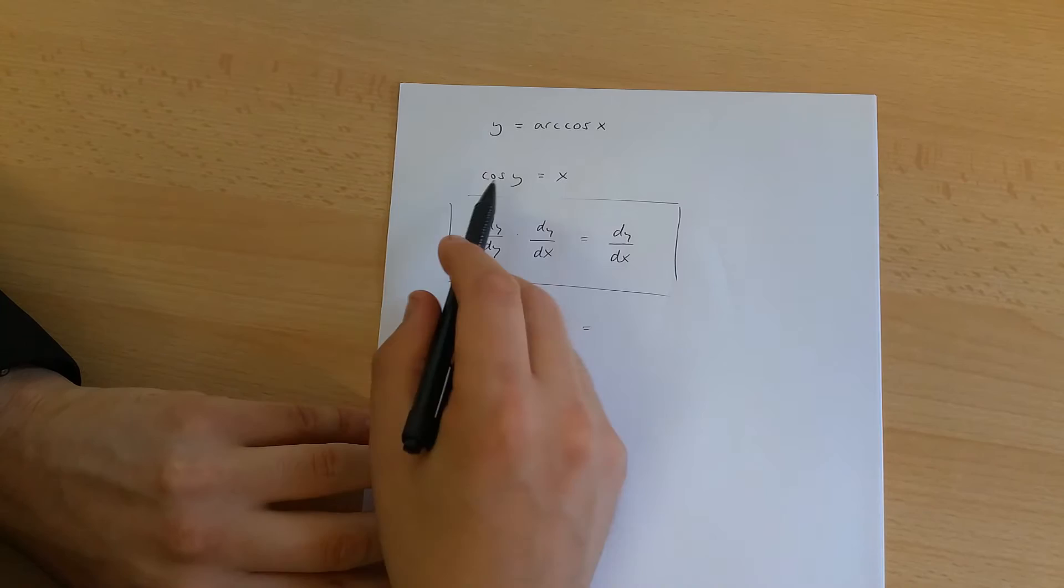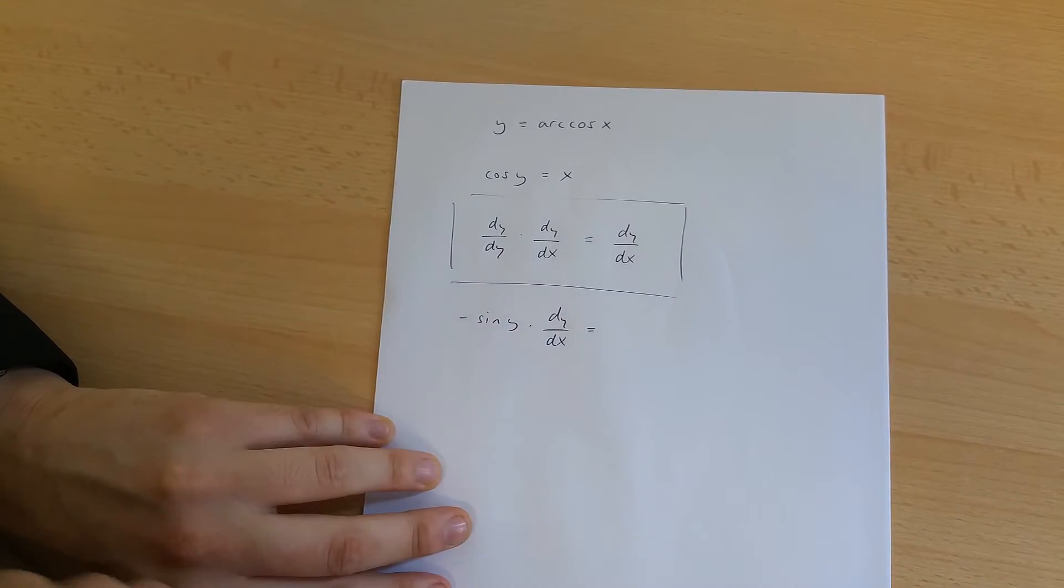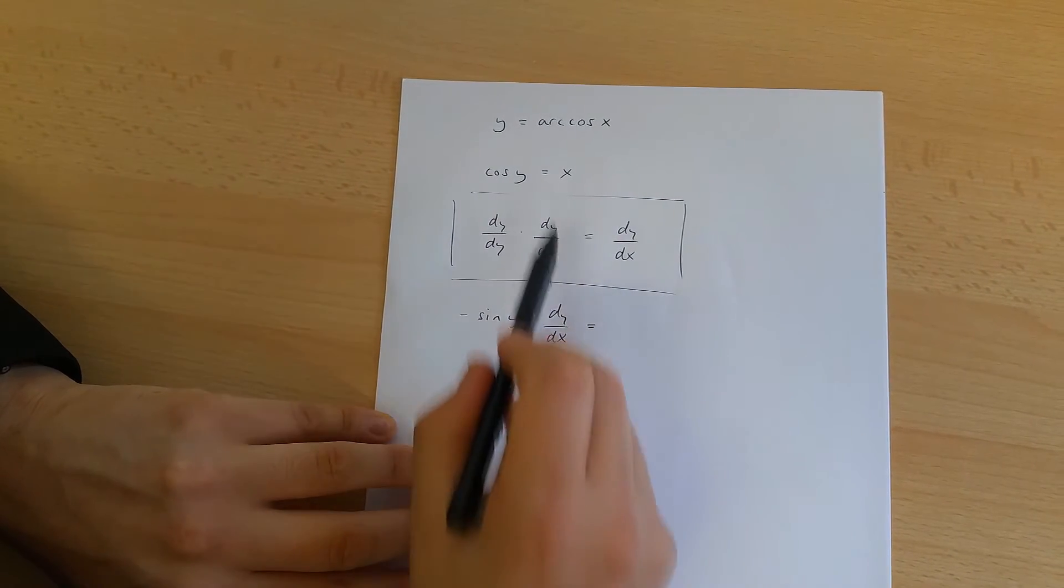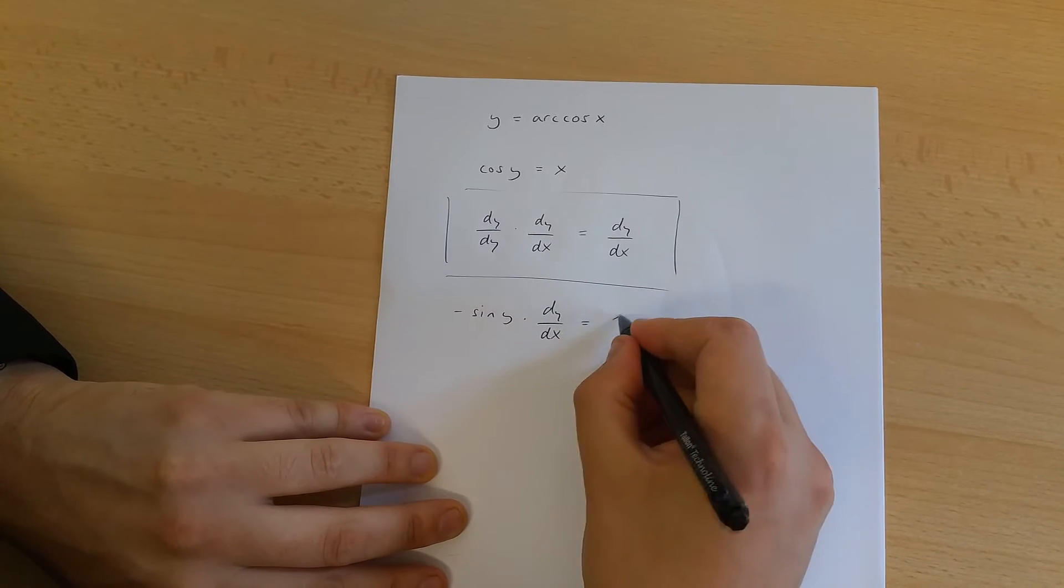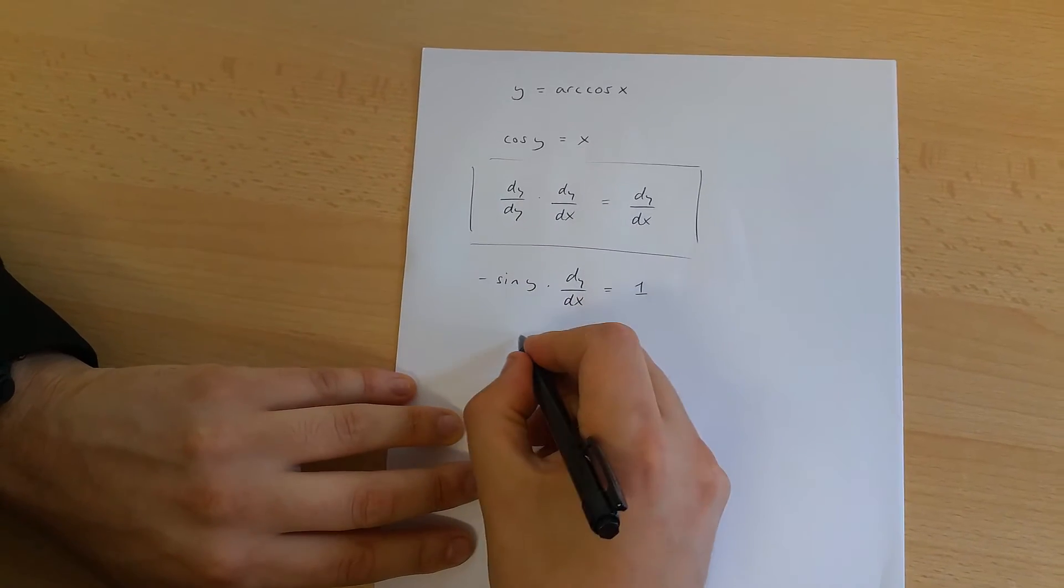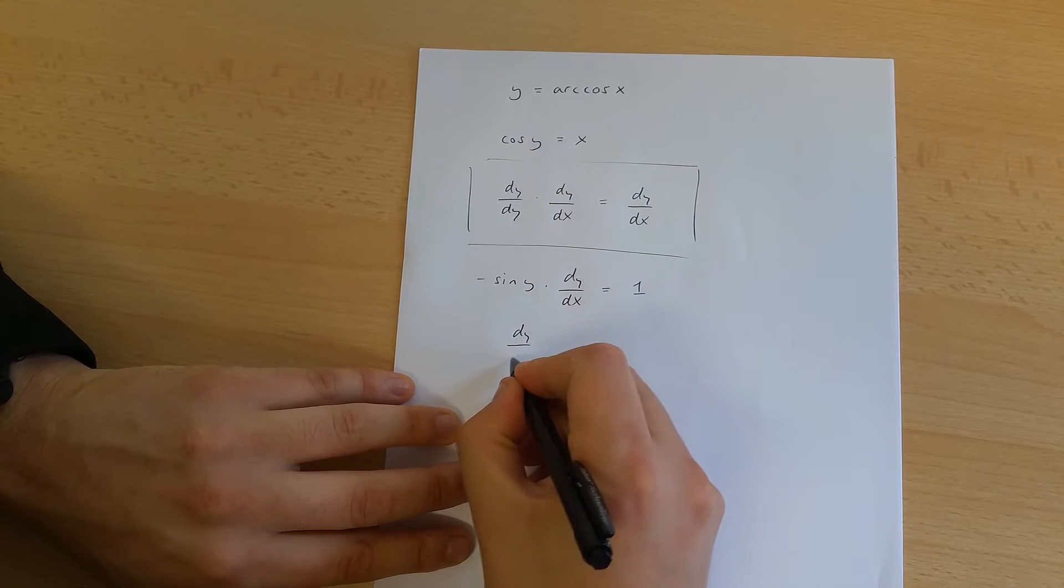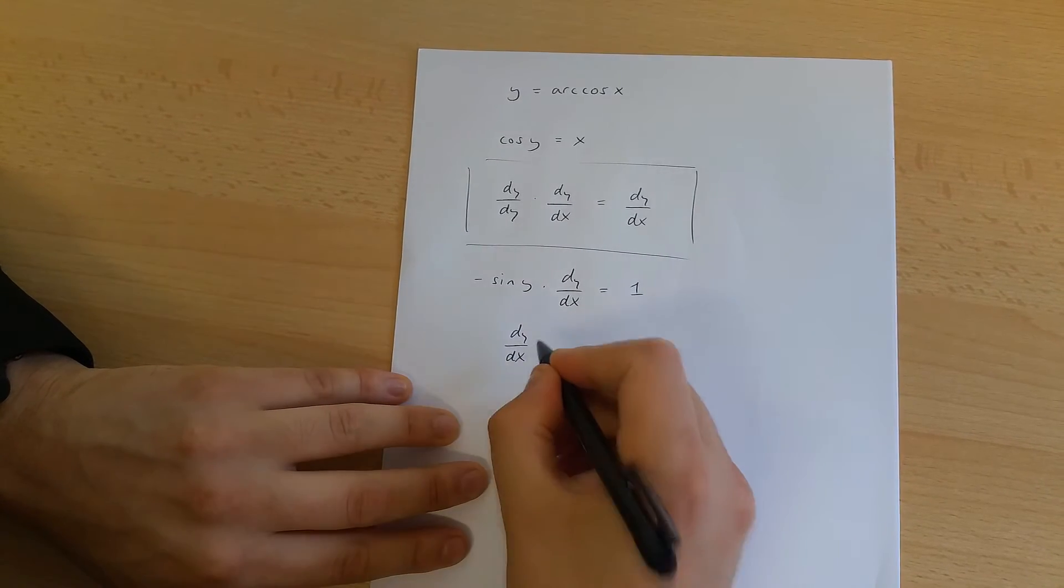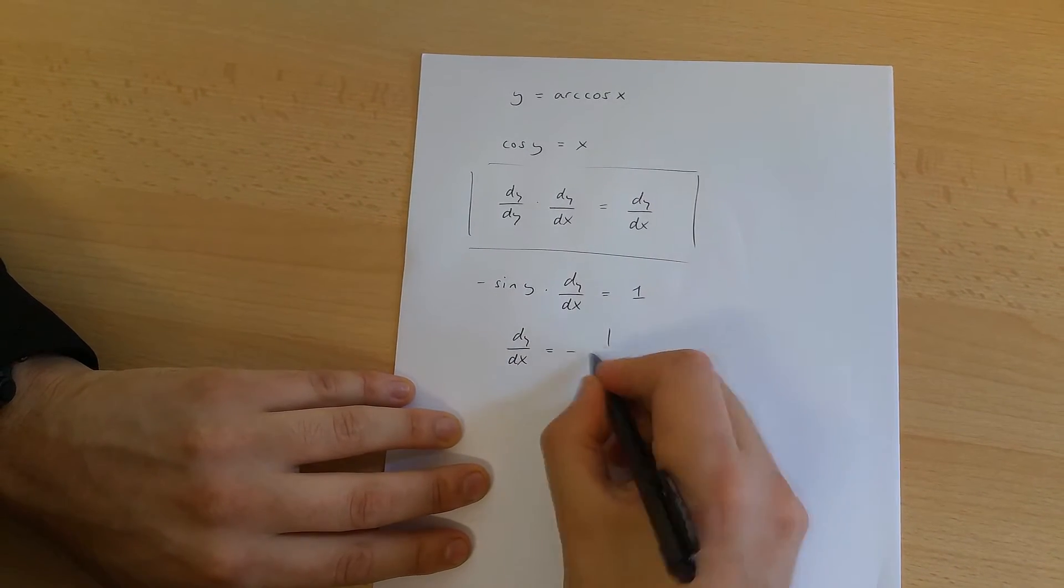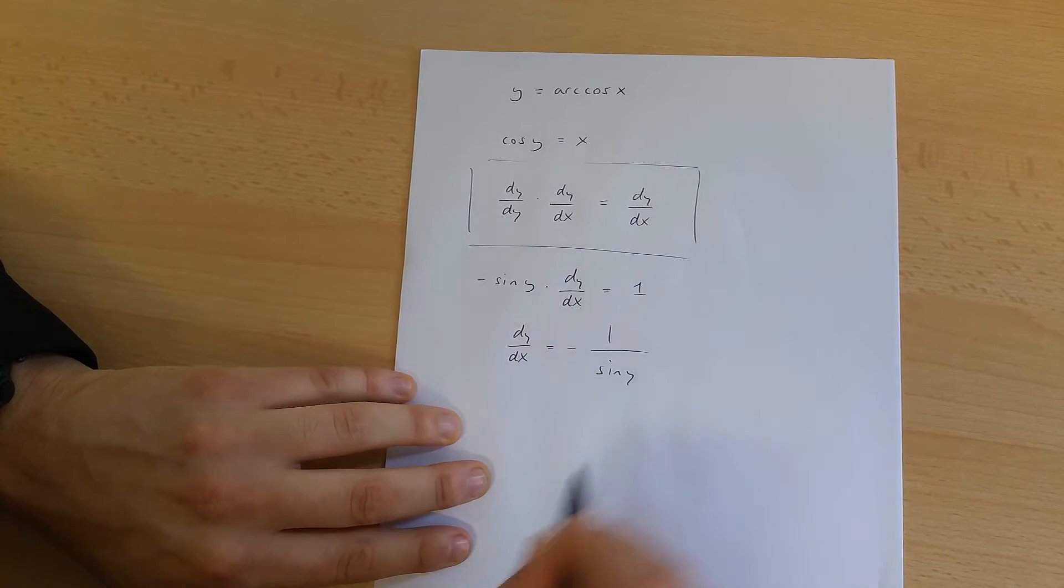Therefore, we've differentiated this side of this equation. Now, if we differentiate x, we're going to get 1. This ultimately means that dy over dx is equal to minus 1 over sine y.